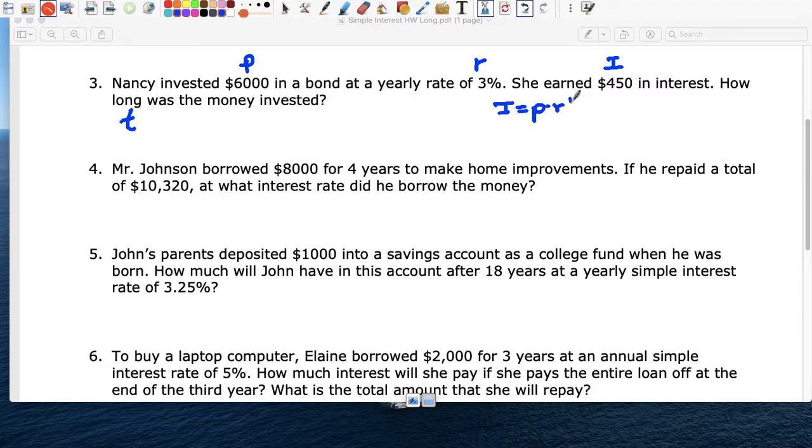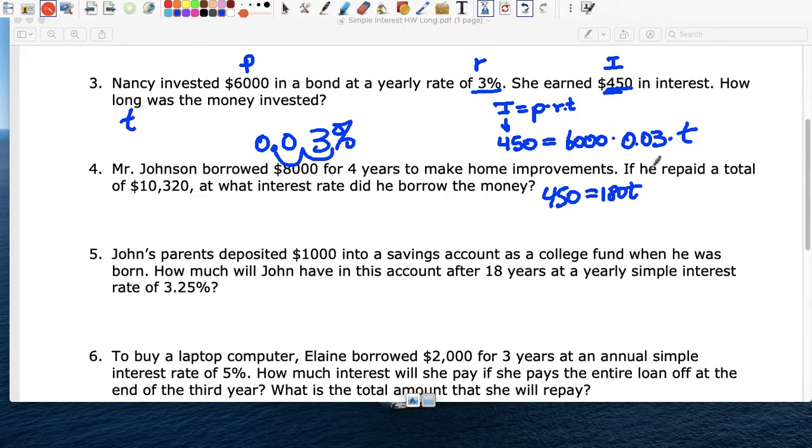So I equals PRT. The I, how much did she earn, is $450. The P is $6,000. The rate is 3%, so 3%. We're going to change this to move it once, two times. It becomes 0.03. And time is what we want. So T, I don't know. So multiply $6,000 times 0.03. And you get $180. So we get $450 equals $180 T. Divide by $180, divide by $180. And T equals 2.5.